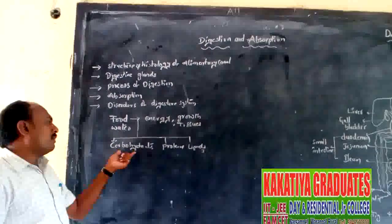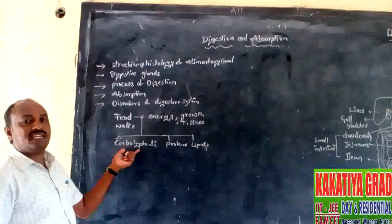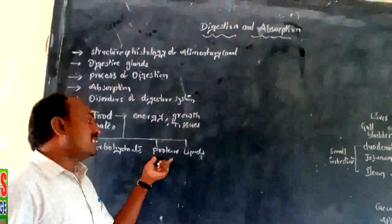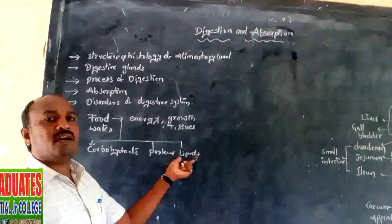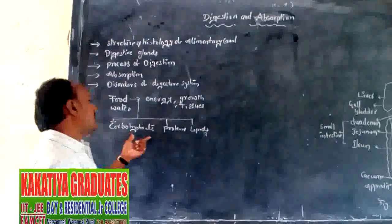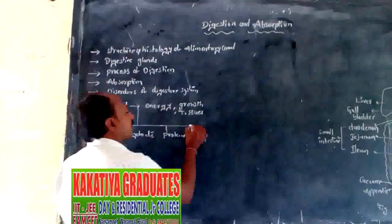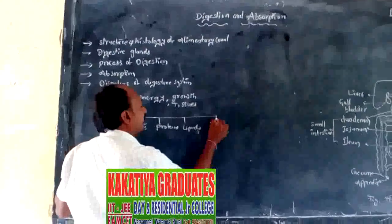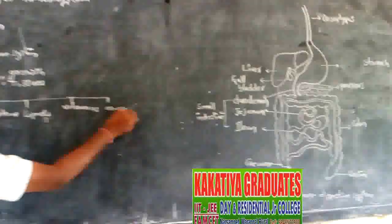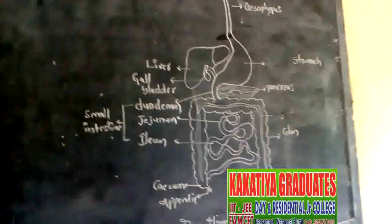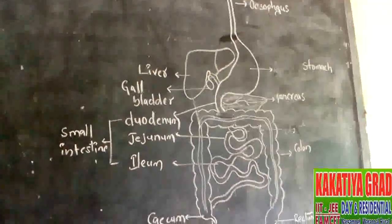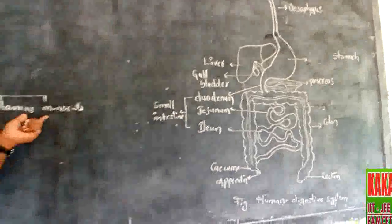Carbohydrates are converted into glucose, proteins are converted into amino acids, and lipids are converted into glycerides and fatty acids. There are also micronutrients — vitamins and minerals — which are readily absorbed through the gut walls and reach the bloodstream.